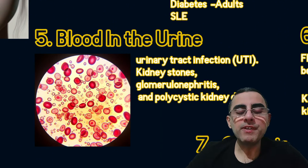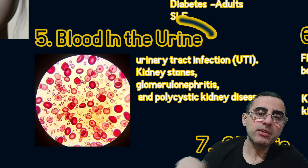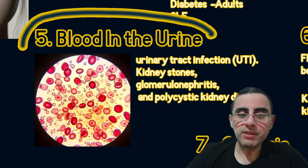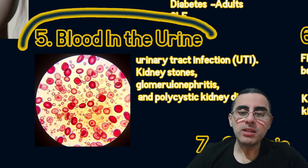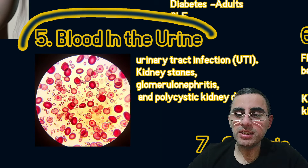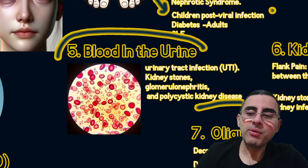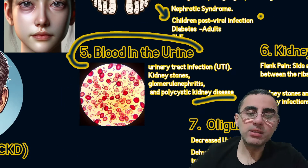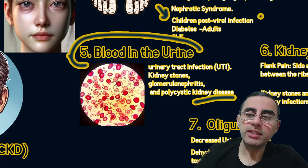The fifth most common symptom is blood in the urine. Blood in the urine can be caused by different conditions like urinary tract infection, kidney stones, glomerulonephritis, or polycystic kidney disease. We should be careful because it can be a sign of important kidney damage.